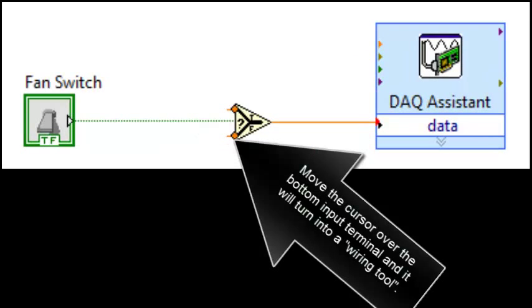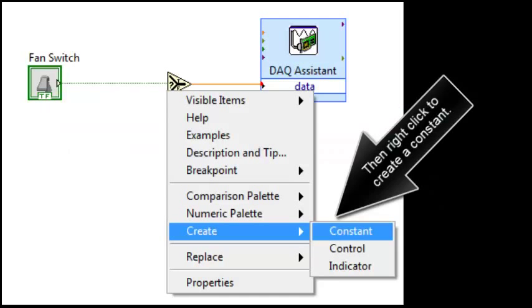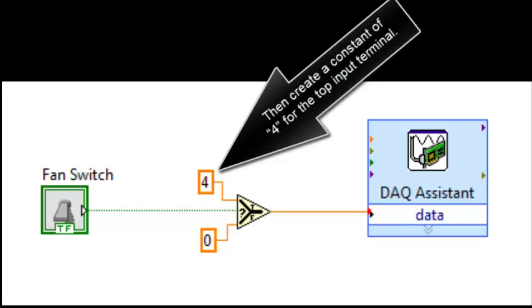Move the cursor over the bottom input terminal and it will turn into a wiring tool. Then right click to create a constant. Then create a constant of 4 for the top input terminal.